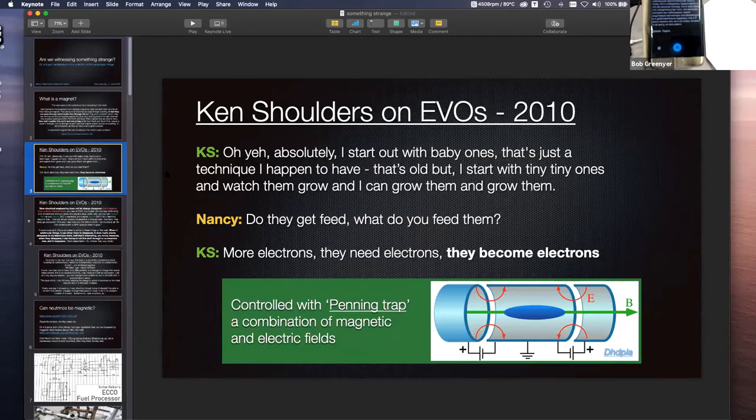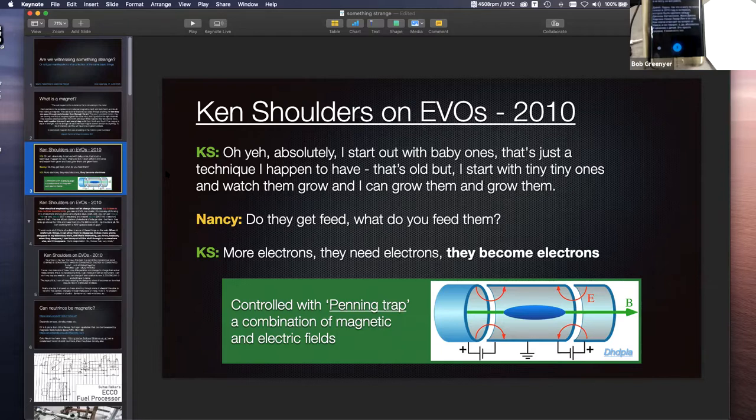Ken Shoulders said in 2010, in an interview between John Hutchison's wife, Nancy Lazarian, and himself, Ken Shoulders is responding to a question from Nancy. He says, 'Oh yeah, absolutely. I start out with baby ones. That's just a technique I happen to have. I start out with tiny, tiny ones, and I watch them grow, and I can grow them and grow them.' And Nancy asks, 'Do they get fed? What do you feed them?' And Ken Shoulders says, 'More electrons. They need electrons. They become electrons.'